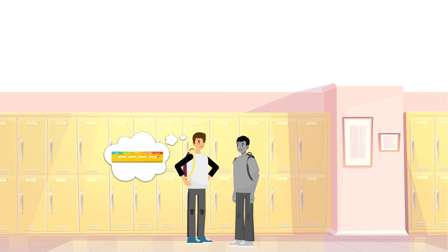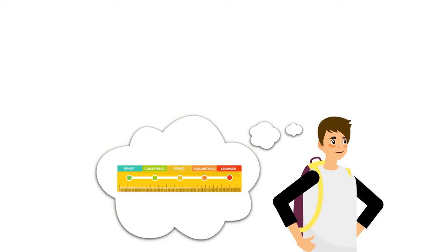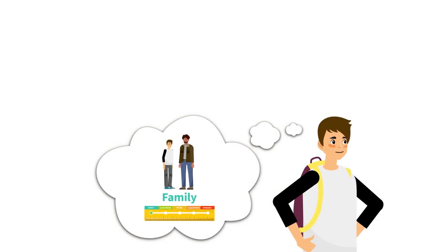We can also use the Relationship Ruler to help us know how much personal space to keep with others. With family members or close friends, we can be closer to them without popping their personal space bubbles.